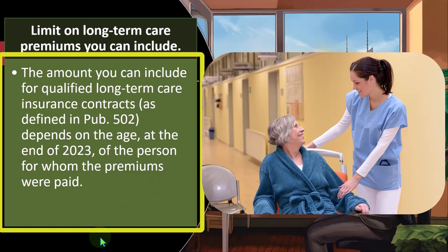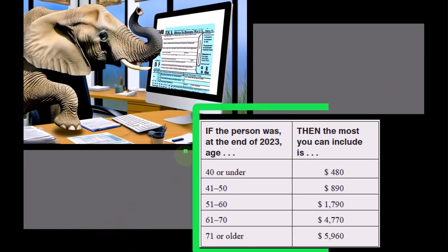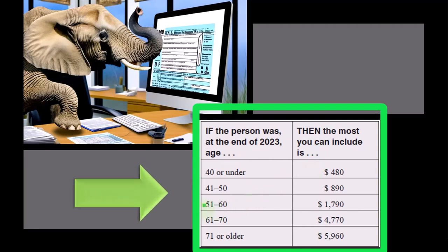The amount you can include for qualified long-term care insurance contracts as defined in Publication 502 depends on the age at the end of 2023 of the person for whom the premiums were paid. Here's our chart: age 40 or under, the most you can include is $480; 41 to 50, $890; 51 to 60, $1,790; 61 to 70, $4,770; and 71 or older, $5,960.